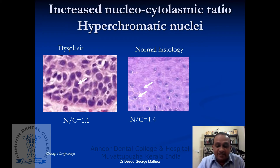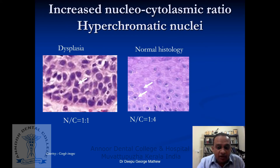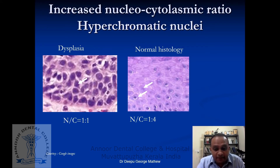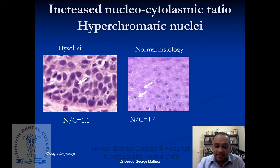Next is hyperchromatic nuclei. The dysplastic cell's nucleus has more blue color in H&E staining than its normal counterpart. This is because the blue color comes from hematoxylin uptake — when more DNA content is present, more hematoxylin uptake occurs. In a highly proliferating dysplastic cell with more chromosomes and DNA, more hematoxylin uptake results in a darker nucleus. Increased nucleocytoplasmic ratio and hyperchromatic nuclei go hand in hand as cytological atypical features of a dysplastic cell.